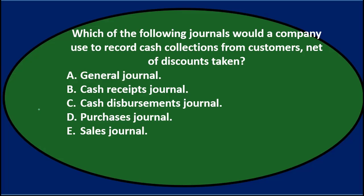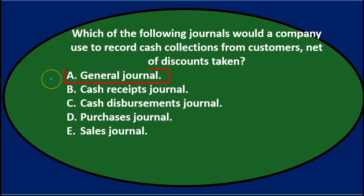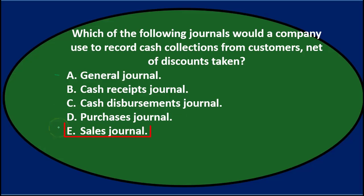Next question: which of the following journals would a company use to record cash collections from a customer, net of discounts taken? A) general journal, B) cash receipts journal, C) cash disbursements journal, D) purchases journal, or E) sales journal.